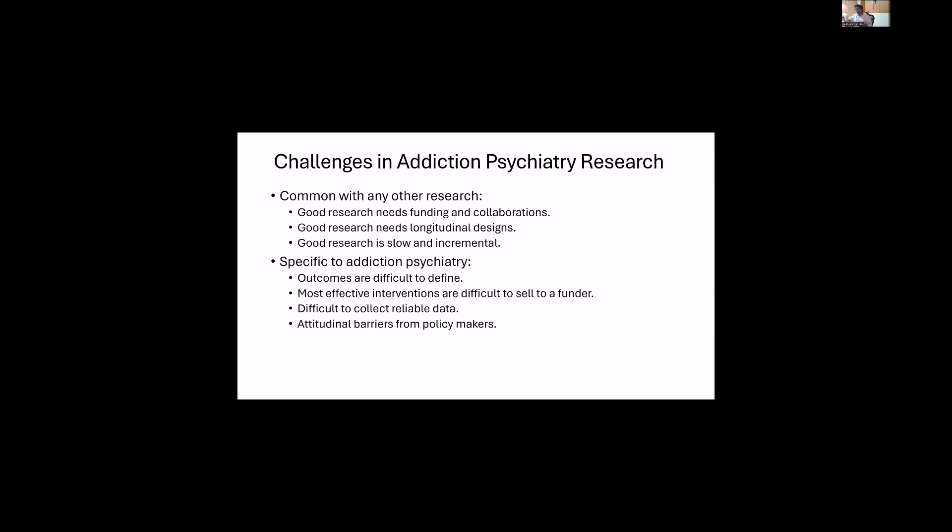It is difficult to collect reliable data — self-report is considered problematic in addiction research, so you need objective markers like urine or blood tests, which are not as easily available as standard tests. There are also attitudinal barriers from policy makers. When applying to ICMR alongside proposals for cataract detection or congenital abnormalities prevention, a protocol on harm reduction in alcohol dependence faces preconceived notions about substance use. Research on anemia in pregnancy is more likely to get funded than research on naltrexone effectiveness in reducing heavy drinking — those are the challenges we face.